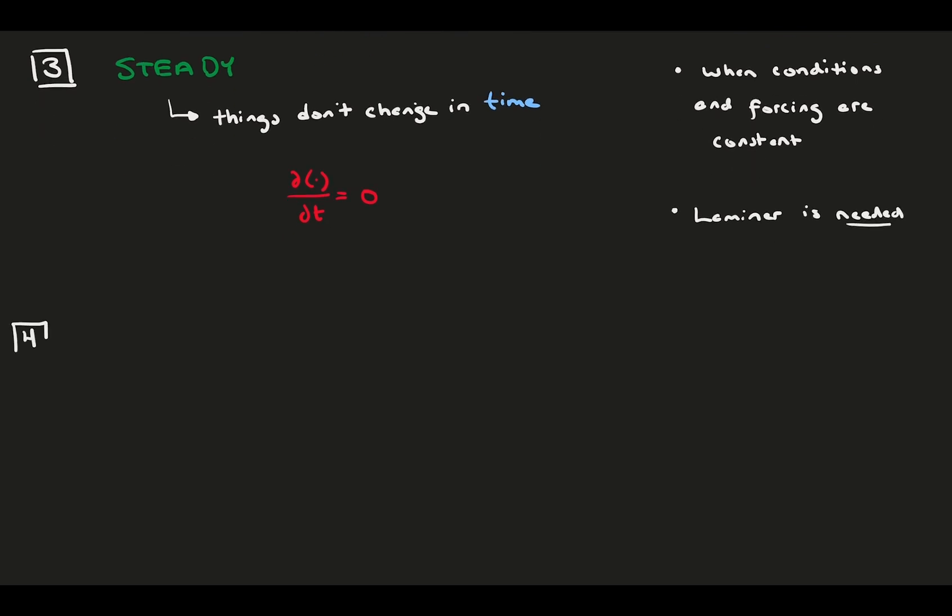Conversely, we have the fully developed assumption for when things don't vary in space. Most commonly, this means flow is not changing in the x direction, which is the streamwise direction typically.